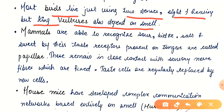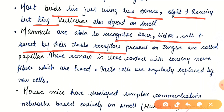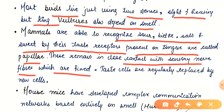Mammals are able to recognize sour, bitter, salt, and sweet by the taste receptors present on the tongue, which are known as papillae. These remain in close contact with sensory nerve fibers. Taste cells are regularly replaced by new cells — so sometimes something we liked in our old days we may not like now, due to the replacement of taste cells.